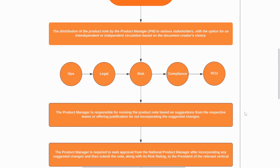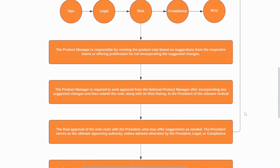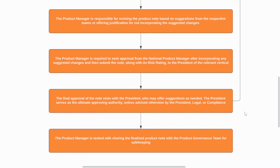Once the review process is done, the next step is to revise the product node based on team suggestions, or provide justification for not incorporating suggested changes. After revision, the product manager seeks approval from their higher authority — the national product manager — and submits the note along with its risk rating to the president of the relevant vertical. Once that authority process is done, the president conducts a final review, and unless advised otherwise, the product manager shares the finalized node with the product governance team.